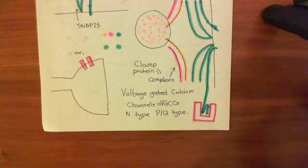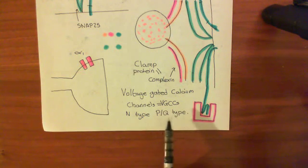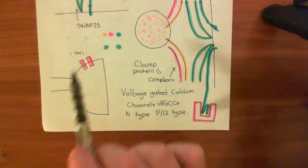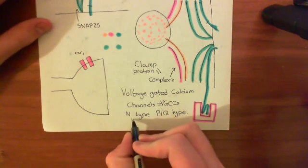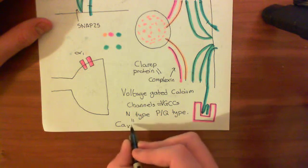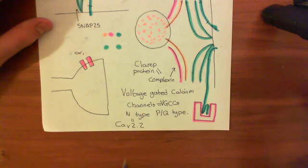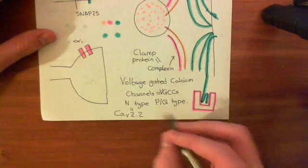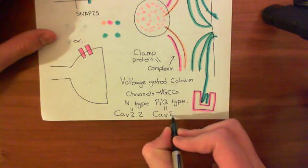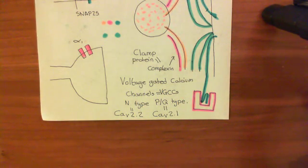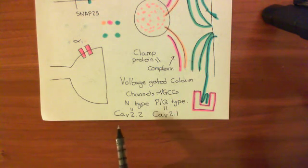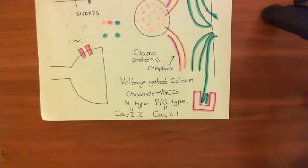There are actually 10 genes in the human genome which code for these alpha-1 subunits. Whether you are an N or PQ-type voltage-gated calcium channel means you used a specific alpha-1 subunit. If you're N-type, it means you used the CAV2.2 gene to make your alpha-1 subunit. If you are PQ-type, it means you used the gene CAV2.1. In the axon terminals of neurons, we only find voltage-gated calcium channels with alpha-1 subunits made from either the CAV2.1 or CAV2.2 gene — so only N-type or PQ-type voltage-gated calcium channels.